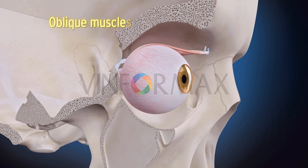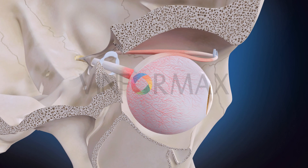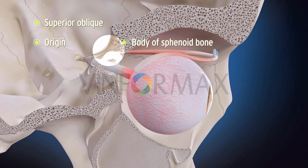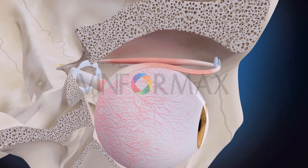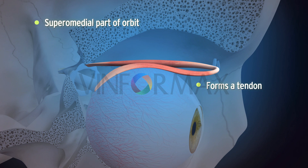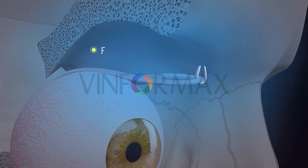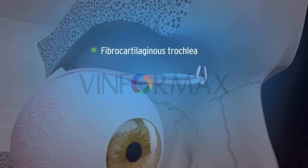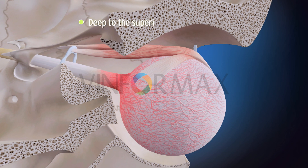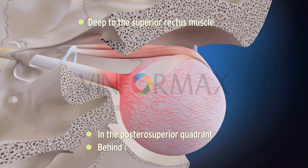The oblique muscles include the superior and inferior oblique. The superior oblique originates from the body of sphenoid bone above and medial to the optic canal. The muscle passes forward along the superior medial part of the orbit, forms a tendon, and passes through the fibrocartilaginous trochlea. It then changes direction, passing posterolaterally deep to the superior rectus, and inserts into the sclera in the posterior superior quadrant of the eyeball behind the equator.